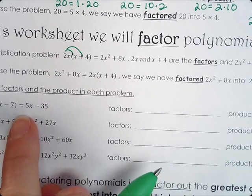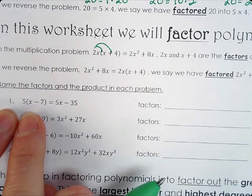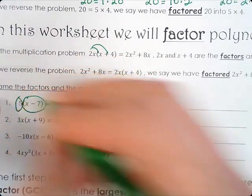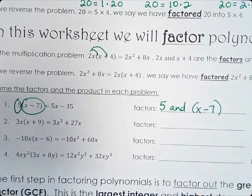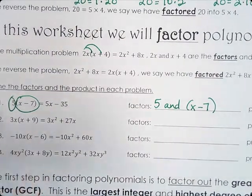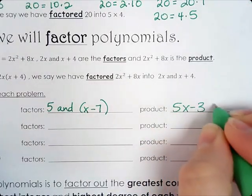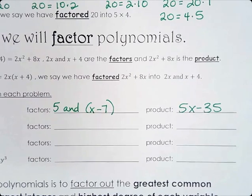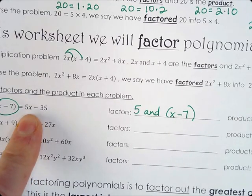Our first part is just naming the factors and naming the product of each problem. If we look at this first one: 5(x − 7) = 5x − 35. So the factors are the terms being multiplied — 5 and (x − 7). And the product of those factors is the outcome: 5x − 35. With factoring, the kind of problem you'll be given is 5x − 35 and you'll be asked to factor it.